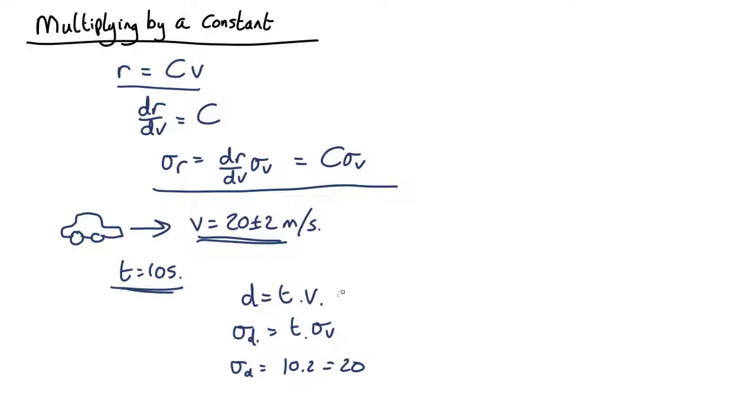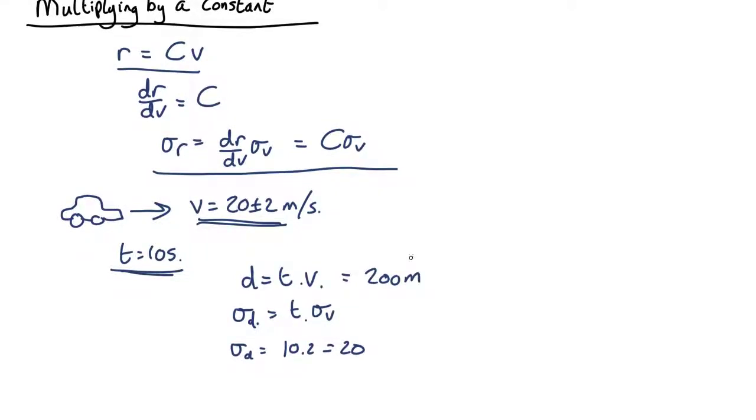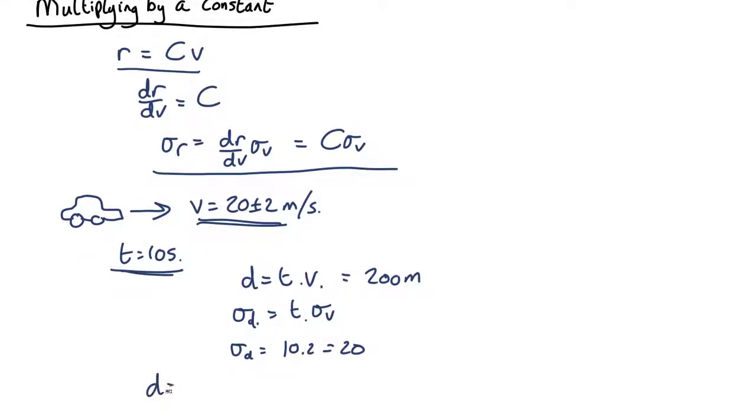We also know the distance traveled is going to be 20 times 10, that's 200 meters. So the distance is 200 plus or minus 20 meters traveled.